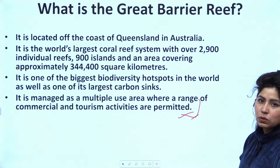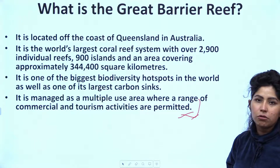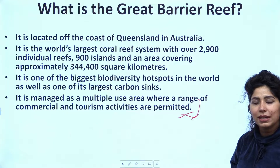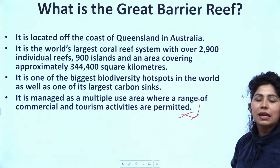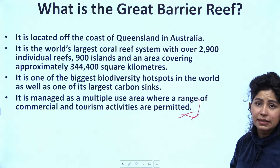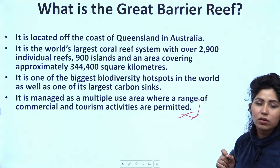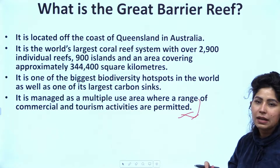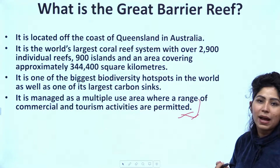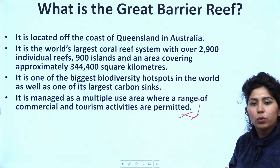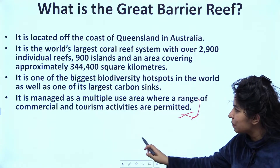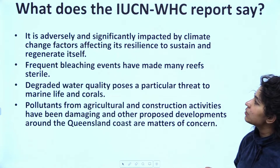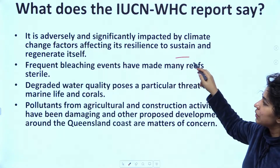Coral reefs are also known as tropical forests of the ocean. Tropical forests, located in equatorial regions, are very important and are known as lungs of the earth — they are very dense and purify the air. So coral reefs are in a way referred to as tropical forests of the ocean, emphasising that same importance. The Great Barrier Reef is adversely and significantly impacted by climate change factors affecting its resilience to sustain and regenerate itself.